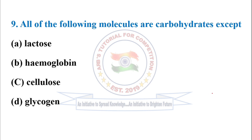Next question: all of the following molecules are carbohydrates except? The answer is hemoglobin — it is a protein found in the blood of humans. Lactose, cellulose, and glycogen are all carbohydrates.